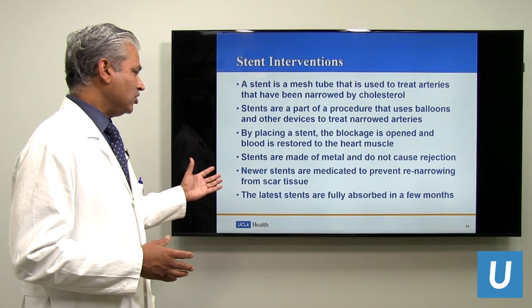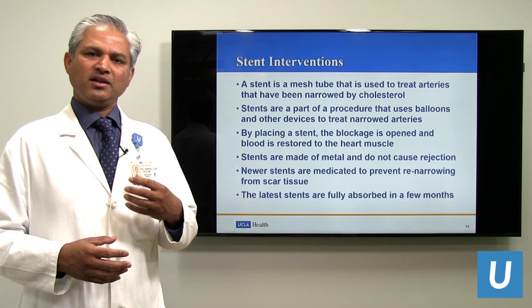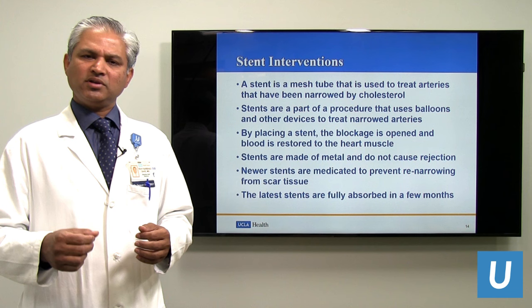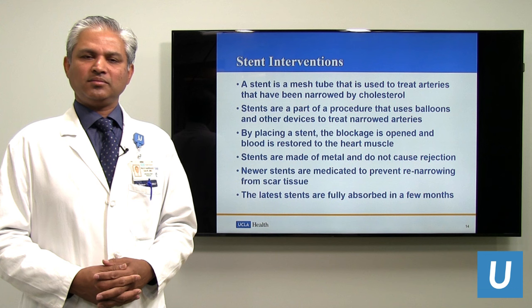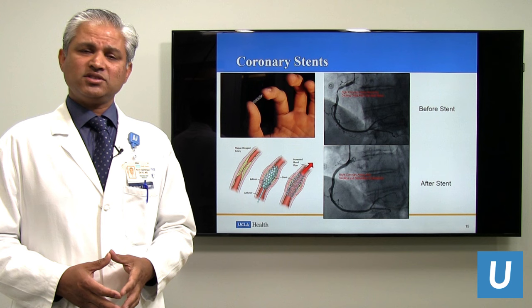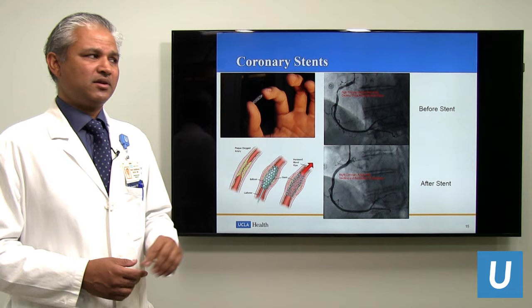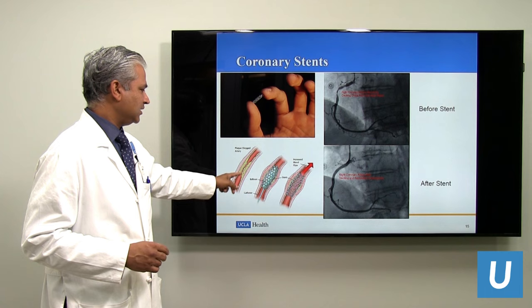A very new type of stent also available at UCLA is one that completely dissolves after about six months to a year. There are a lot of advantages because you're not leaving any foreign material inside your arteries. These stents are made with the same type of material often used for sutures that surgeons use inside the body — the sutures do the work and then dissolve, leaving no foreign material inside the body. As you can see in the pictures, the stents are very small — human arteries are generally between two to four millimeters in diameter. The stents are much smaller than your finger, probably about the same size as a ballpoint pen refill. These stents go inside narrowed arteries and once expanded, they stay expanded and make sure the blockage doesn't come back.